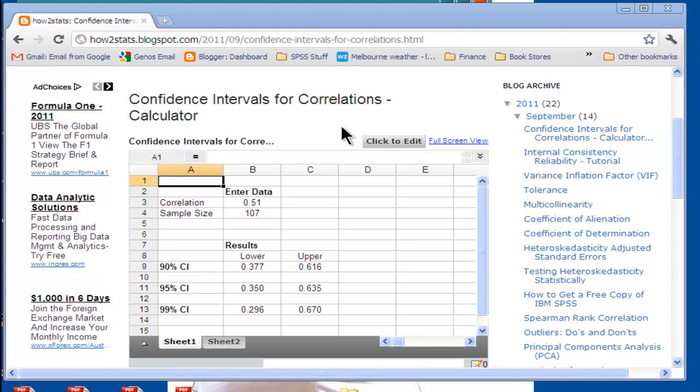The first step in using this spreadsheet is to activate it, so you have to click to edit. It usually takes a few seconds. Once the shade changes, it's ready to be edited.